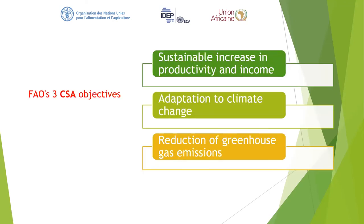The three climate smart agriculture objectives are: first, sustainable increase in productivity and income; second, adaptation to climate change; and third, reduction of greenhouse gas emissions. As participants, the onus is on you to dig deeper into these objectives and read more about FAO's climate smart agriculture goals.